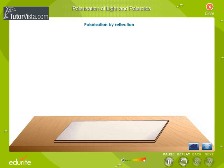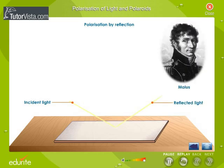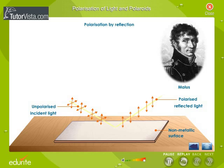Polarization by reflection. The simplest method of obtaining plane polarized light is by reflection. In 1808, Malus, a French physicist, discovered that when ordinary light is reflected from the surface of a transparent medium like water, glass, or a non-metallic surface, the reflected light is partially polarized, and the degree of polarization varies with the angle of incidence.